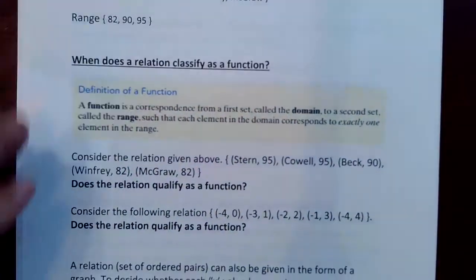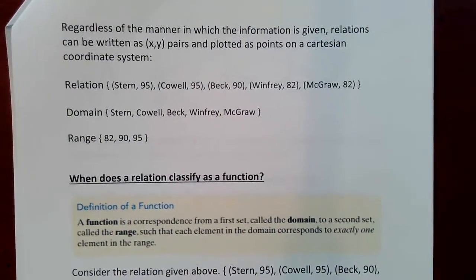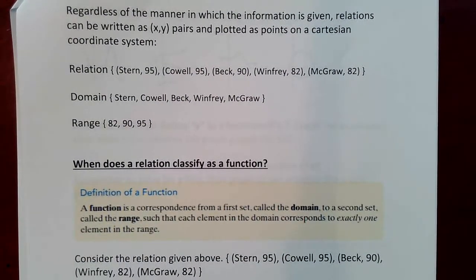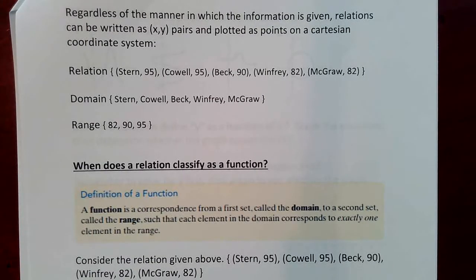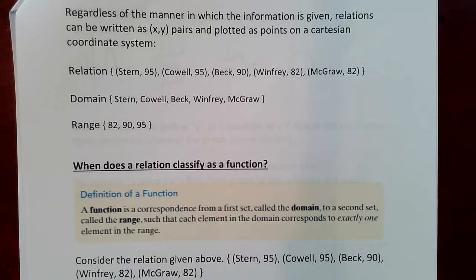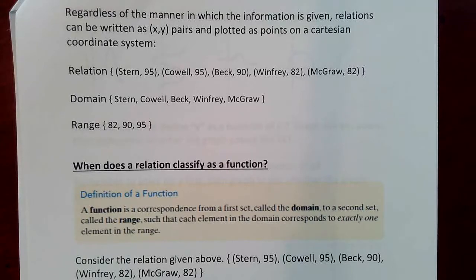No matter how the information is given, you just have to be familiar with the format. On the bar graph, the numbers along the horizontal axis represented the X's, while the salaries up the Y axis represented the Y coordinate. In the table, the first column was the X's and the second column was the Y's. In a mapping diagram, the first bubble is the domain — the X's — and the second bubble is the Y values or the range. It doesn't really matter which format they give it to you in; they can all be written as ordered pairs.